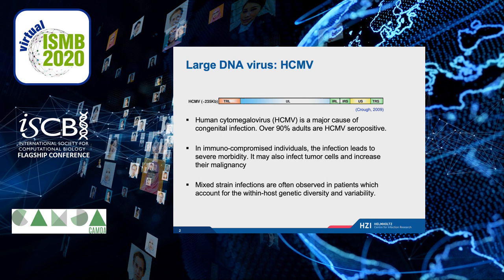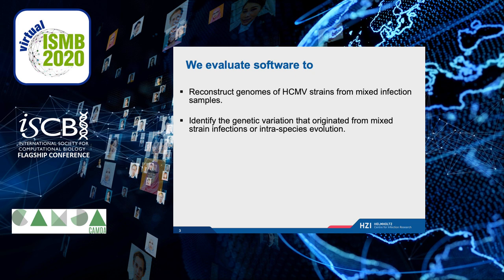HCMV is a large DNA virus with a genome length of 235 kb, and it's a major cause of congenital infection. Over 90% of adults are HCMV seropositive. In immune-compromised individuals, the infection can lead to significant morbidity. Mixed-strain infections are often observed in patients, which account for within-host genetic diversity and variability.